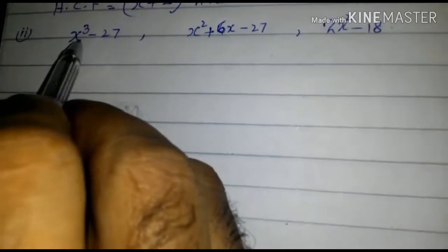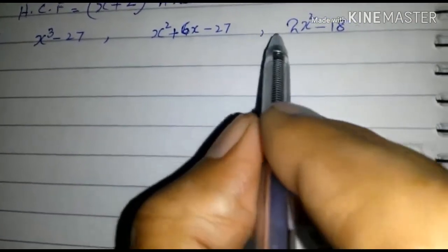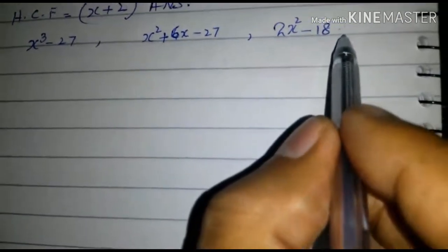First expression is x cube minus 27. Second is x square plus 6x minus 27. And third is 2x square minus 18.